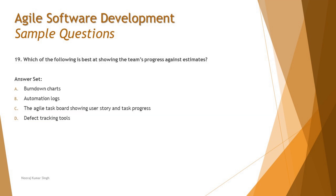Moving on to question 19: which of the following is best at showing the team's progress against estimates? The answer options are: A — burn-down charts, B — automation logs, C — the agile task board showing user stories and task progress, D — defect tracking tools. Say you estimated three days of work; you need a metric tracking progress on day one, two, and three to show whether the team is progressing per estimates.